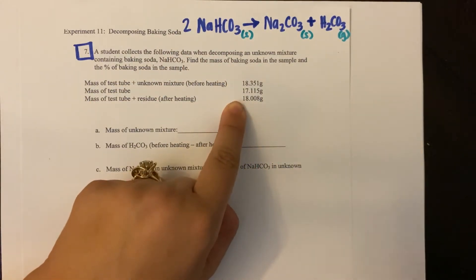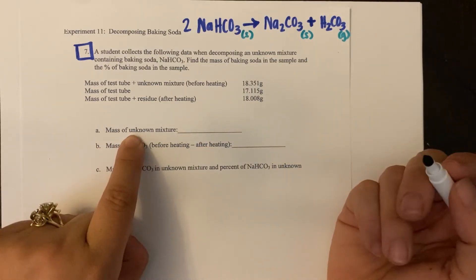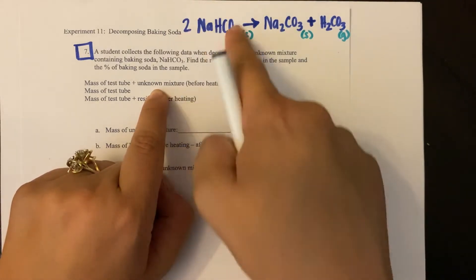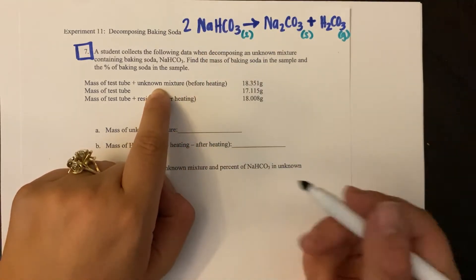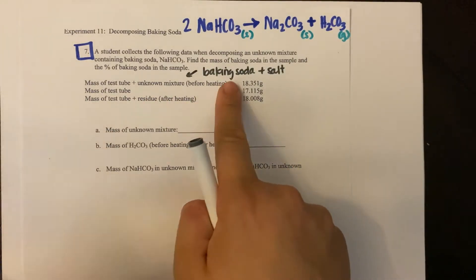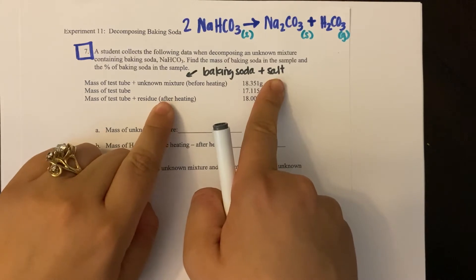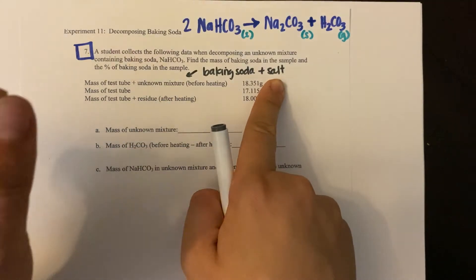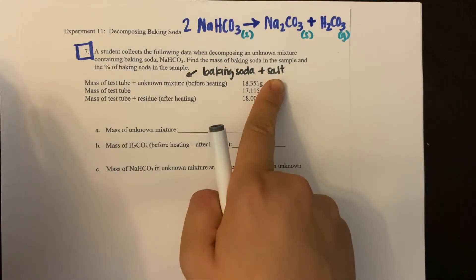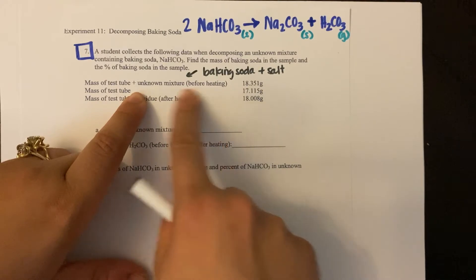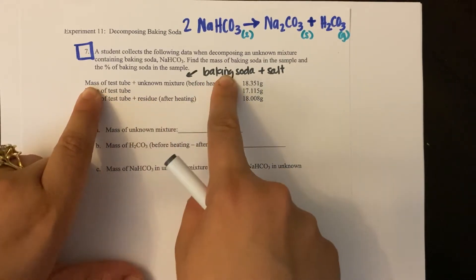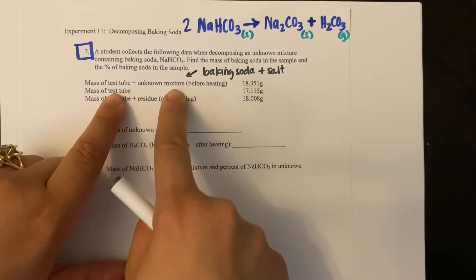So first things first, the mass of my unknown mixture. Your unknown actually has baking soda, and it has some salt in it. So your unknown mixture has both baking soda and salt mixed in, but you can't tell the difference. You can't tell if that's a grain of baking soda, or if it's a grain of salt, they all look the same. So what I need to do is figure out the mass of my unknown mixture, which is both baking soda and salt, it's a mix.